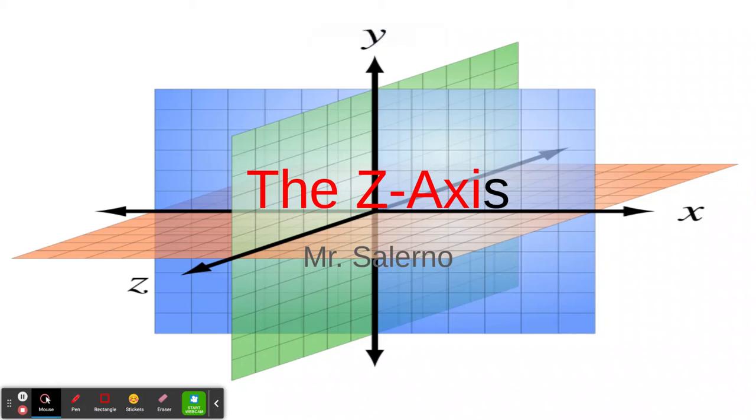Here's our video on the z-axis. When we use the z-axis, we're talking about three-dimensional shapes. When we use the x and y plane, we use two-dimensional shapes, 2D.